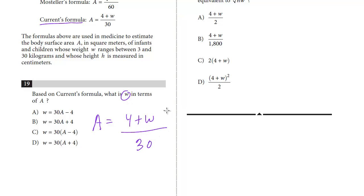So the first step is we're going to multiply both sides by 30. All right, and so on the left, we get 30A. On the right, the 30 cancels out, and we get 4 plus W.